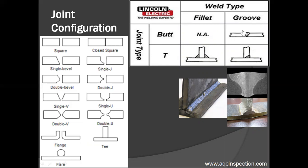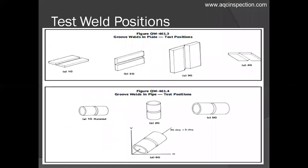Groove welds are otherwise called complete joint penetration or full penetration. Based on the type of grooves, there are several types of weld joint configurations. Based on the weld positions, plate weld positions are: 1G (flat), 2G (horizontal), 3G (vertical with uphill or downhill motion), and 4G (overhead). Pipe positions are: 1G (pipe rotated), 2G (horizontal), 5G (pipe fixed), and 6G (pipe inclined at 45 degrees).